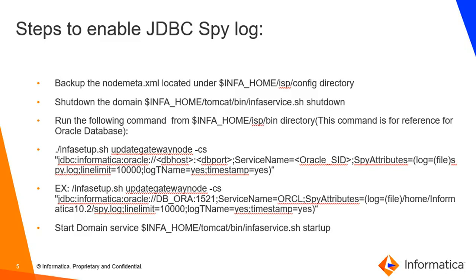In the INFA_CS option, we have to specify domain DB details which are DB host, port, service name or SID, along with the spy attributes. In the spy attributes we can specify spy log name, location, and line limit, port, and timestamp. Below is an example where I have specified the DB host, port number, and the service name. In the spy attributes I have specified the spy log name as spy.log.